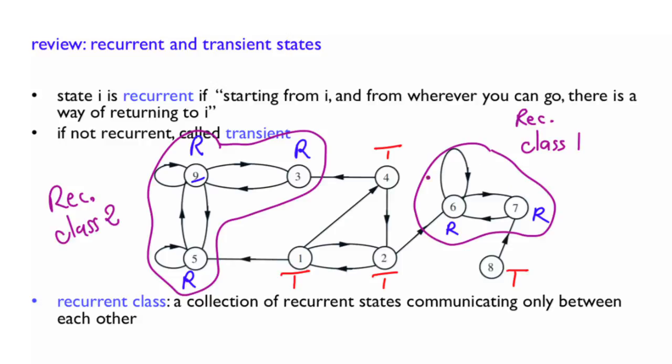And vice versa, if it started here, the probability of being in that recurrent class in the long run is 0. So the long-run behavior of the Markov chain will depend on the initial condition.